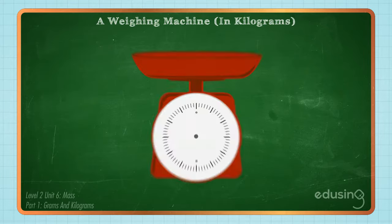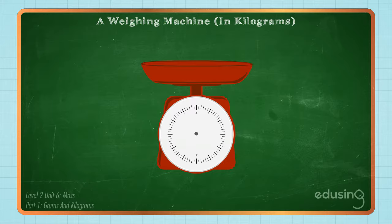The mass of heavy objects are measured in kilograms. To measure the mass of heavy objects in kilograms, we need to use a different weighing machine. This weighing machine is marked out at every 1 kilogram.